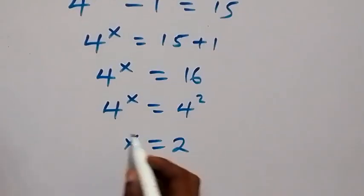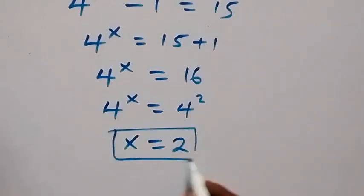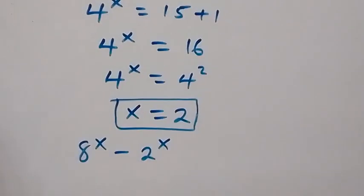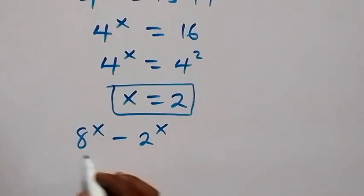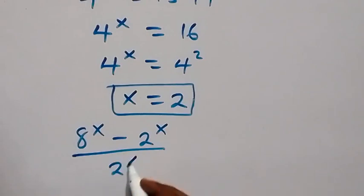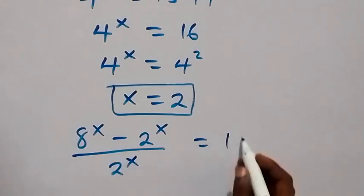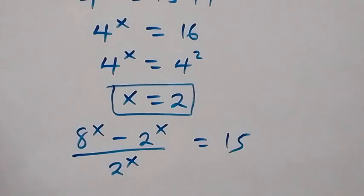From here, to check if this satisfies the relation, which is (8^x - 2^x) / 2^x equals 15, now put x equals 2 here.